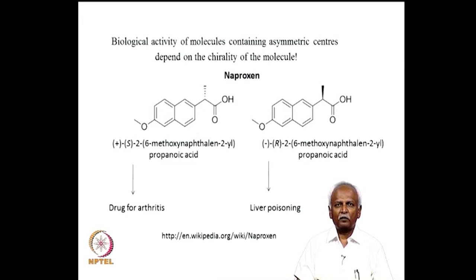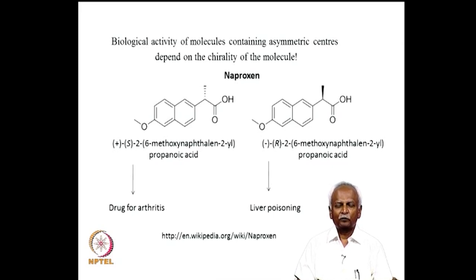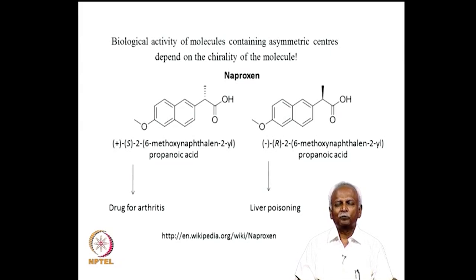If you look at the biological activity of molecules, especially those which contain an asymmetric carbon, you soon find that in many cases these molecules have different biological properties when it comes to their reaction with the body. Here are two molecules, naproxen — the R isomer and the S isomer. The S isomer is a drug for arthritis, whereas the R isomer unfortunately is a liver poison. If you give the mixture of these two chiral molecules to the patient, the patient will have relief from arthritis but might die from liver poisoning.